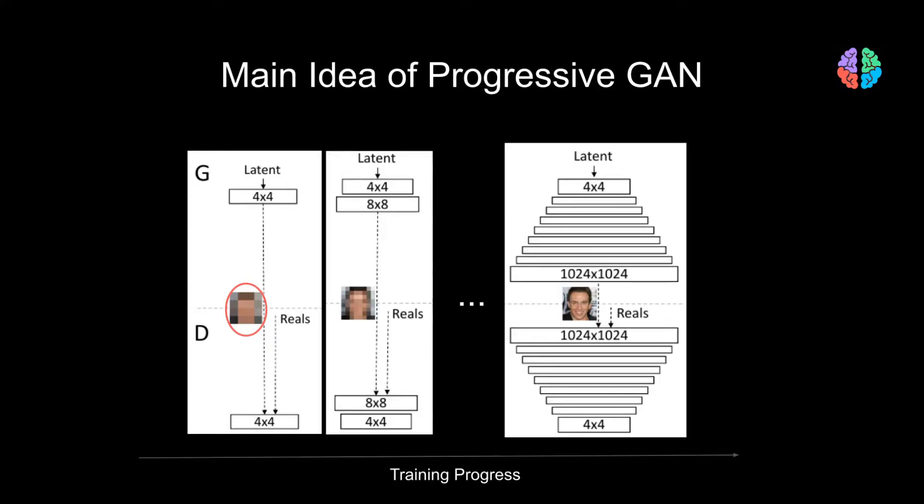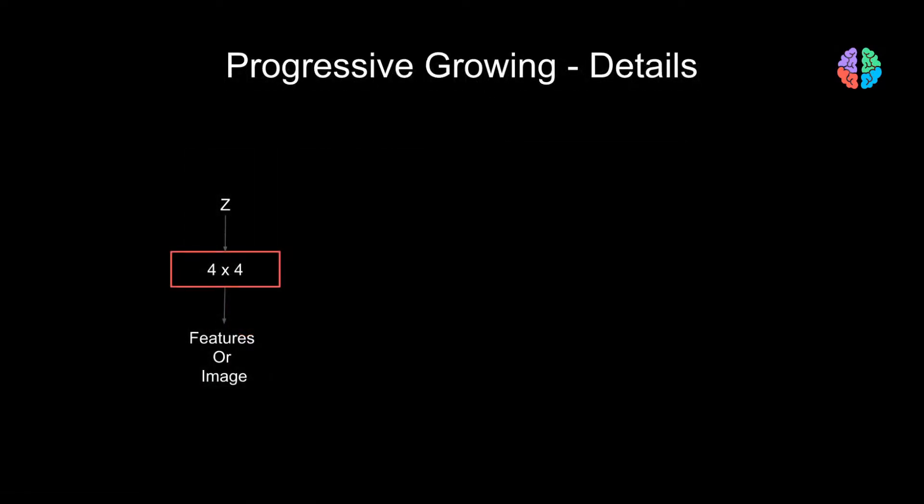By growing the network progressively, the network seems to learn high-level structures first, followed by finer-scale details available at higher resolutions. With that overview, let's get into the details and tricks introduced in the paper.